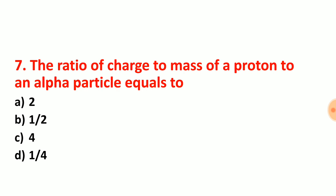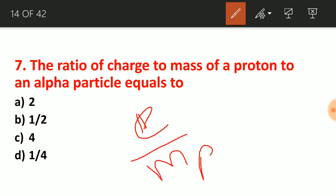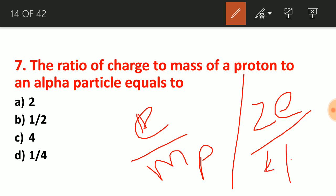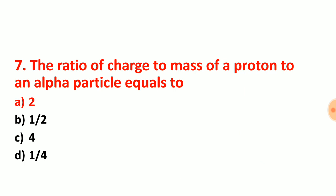Question number 7: the ratio of charge to mass of a proton to an alpha particle. Charge to mass ratio is called specific charge. Specific charge of proton is charge of proton divided by mass of proton. Charge of alpha particle is 2E and mass of alpha particle is 4 times mass of proton. Solving this, E and E cancel, MP and MP cancel, giving 2 to 4. The answer is option choice A — charge to mass ratio of proton to alpha particle is 2.